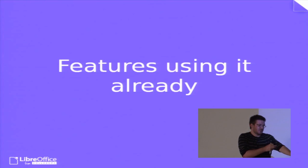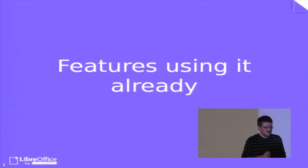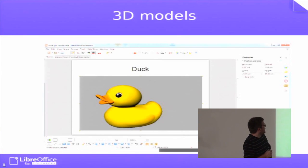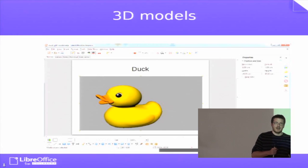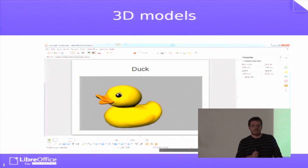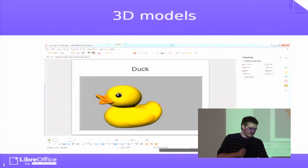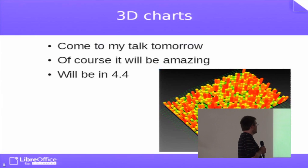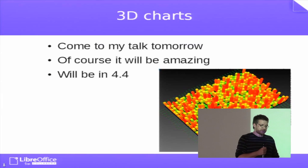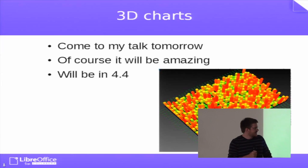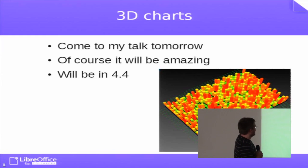Which features are already using it? We have four different features. The 3D models use libGLTF and our OpenGL context, but the OpenGL calls themselves are in an external library — it works surprisingly well, though it requires OpenGL 3.0. Then my 3D charts, which will be available in 4.4 — I'll talk more about them tomorrow. Sadly they are broken in master after my last big merge before the conference, so I won't be able to show a demo tomorrow, but you can see a screenshot from a few weeks ago.